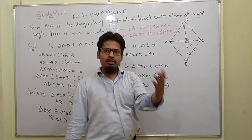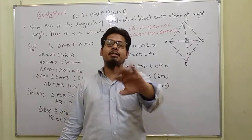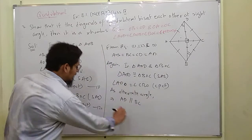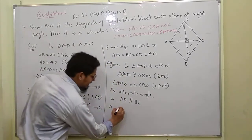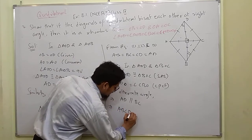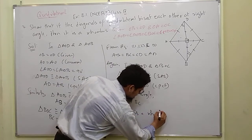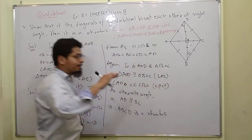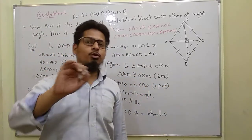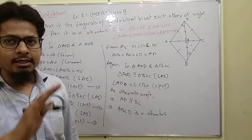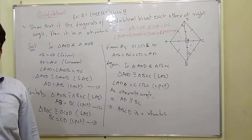From all this we can say it is a rhombus. ABCD is a rhombus — a parallelogram with all sides equal, diagonals bisecting each other, and they are intersecting at 90 degrees. So ABCD is a rhombus. Question over.